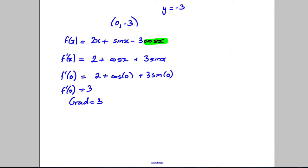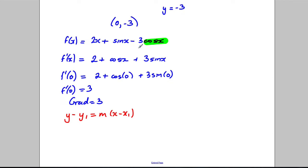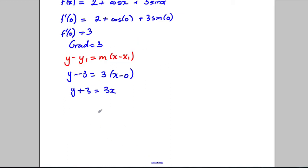Now use the straight-line formula y - y₁ = m(x - x₁). Let's check we want the tangent, not the normal — yes, the tangent. So: y - (-3) = 3(x - 0), giving y + 3 = 3x, therefore y = 3x - 3 is our answer.